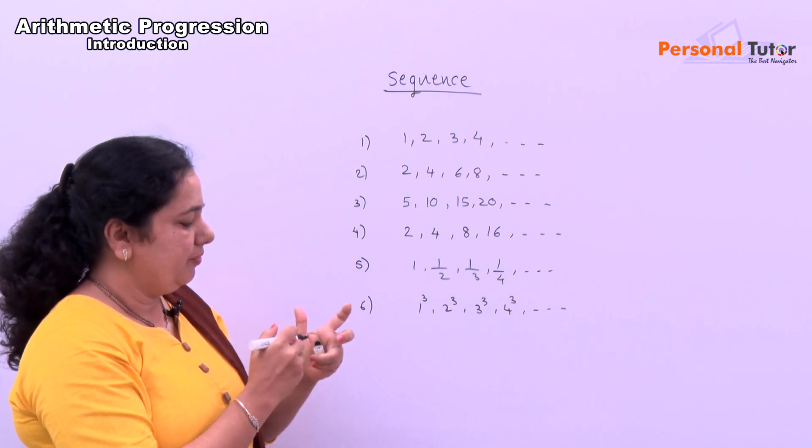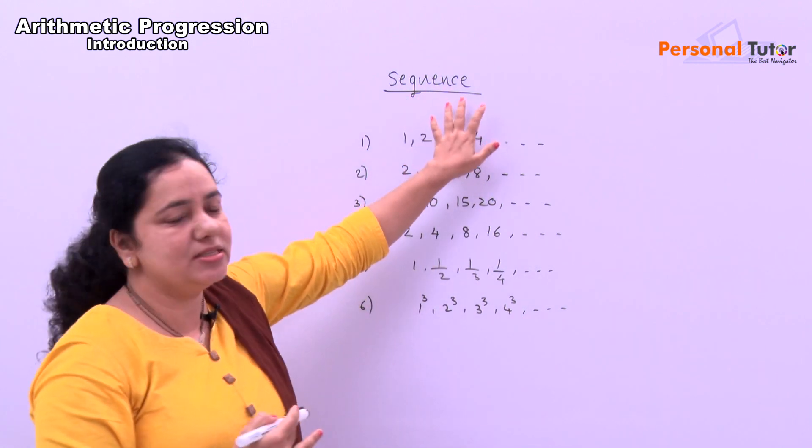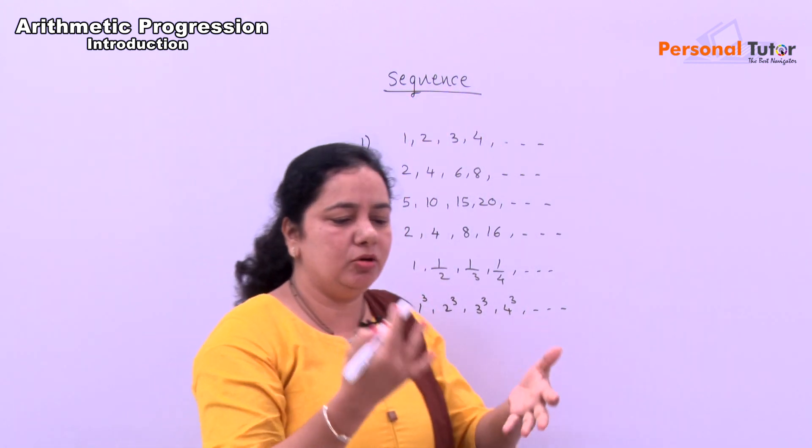Any numbers which have some specific pattern or definite order, then it is called as a sequence. Means here, there is a particular pattern.